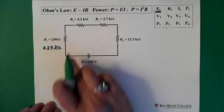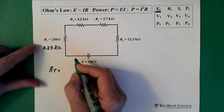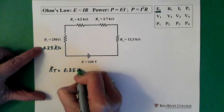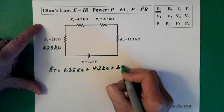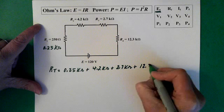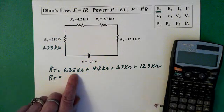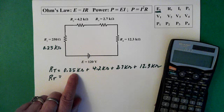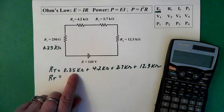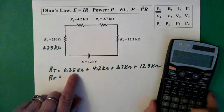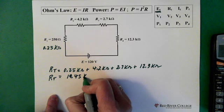Now in order to get our total resistance in a series circuit, we just add up the resistances. So R total equals R1, which is 0.25 kilohms, plus R2, 4.2 kilohms, plus R3, 2.7 kilohms, plus R4, 12.3 kilohms. When you're adding them up, just add the numbers because they're all in kilohms. 0.25 plus 4.2 plus 2.7 plus 12.3 equals 19.45 kilohms. That's our total resistance.